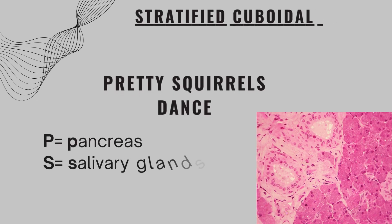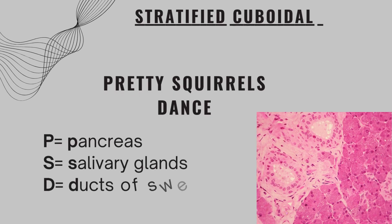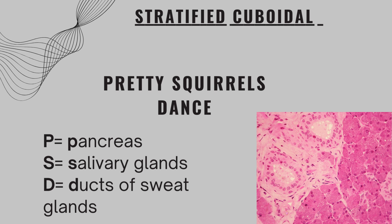Next we have stratified cuboidal epithelium, and the mnemonic is: Pretty Squirrels Dance. Pretty — P — signifies pancreas. Squirrels — S — signifies salivary glands. Dance — D — signifies ducts of sweat glands.